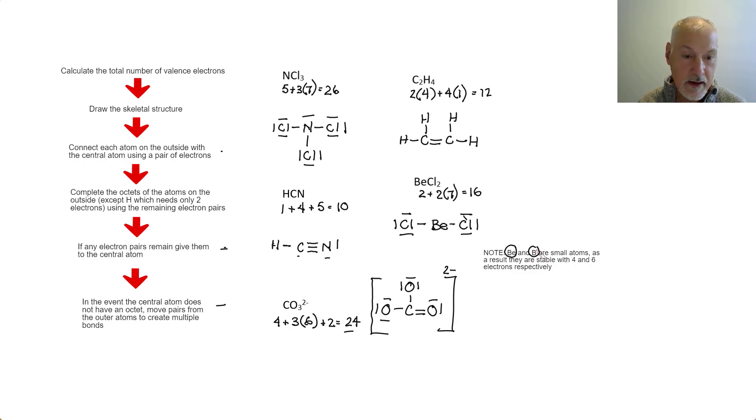These are very small atoms and unable to hold eight electrons in their valence shell. As a result, they're stable with just four and six respectively. So the four going with the beryllium matches what I have here. So I'm actually finished with beryllium chloride.